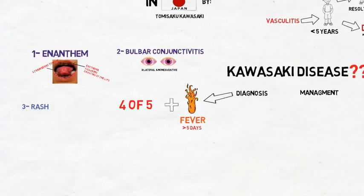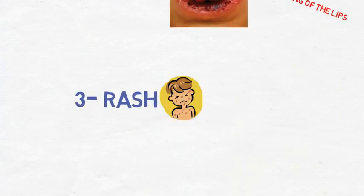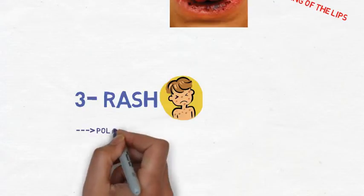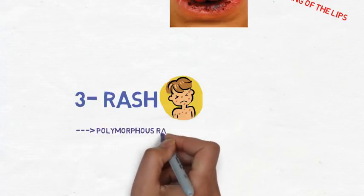Third is rash. The rash of Kawasaki disease is mainly polymorphous and usually generalized.